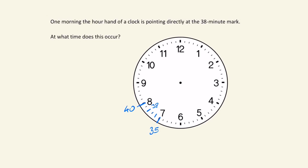So that would be 36, 37, then 38. What we know is that the hour hand pointing at this must be 7 something. So the time at the moment must be 7 something. We're going to try and figure out what the minute is. In order to solve this, we need to think about how the hour hand moves relative to the minute hand.